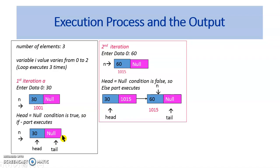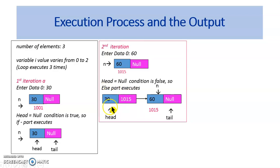During the second iteration, when a new node is created, assume it is allocated the memory location 1015. The data value is set to 60 and next field is set to null. Now, as the condition head equal to null is false, the else part executes. The next pointer of tail is made to point to n by setting tail.next equal to n. By this, the node with 30 has the address field set to 1015. Now the new tail is n. This is how the list looks at the end of the second iteration.